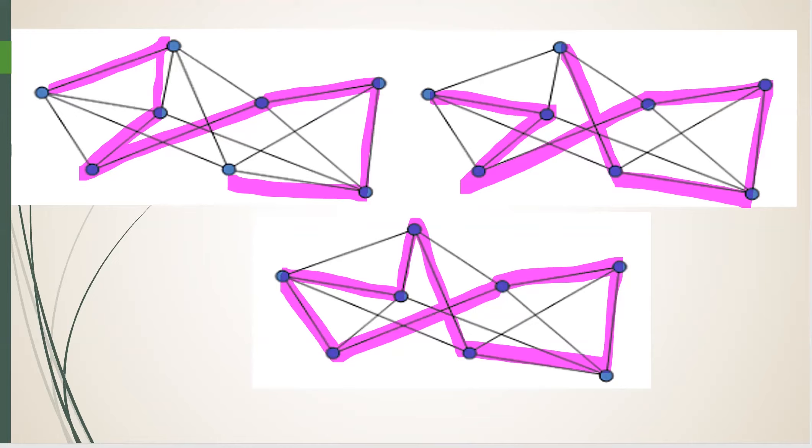This graph also has a Hamiltonian circuit. Note that we leave out a bunch of edges, but that's okay. Hamiltonian requires to cover the vertices, not the edges.